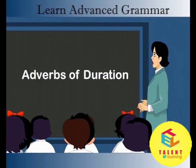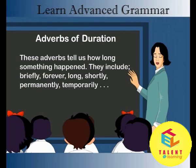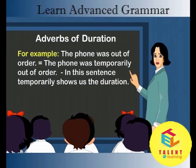Adverbs of duration. These adverbs tell us how long something happened. They include briefly, forever, long, shortly, permanently, temporarily. For example: The phone was out of order / The phone was temporarily out of order. In this sentence, temporarily shows us the duration.